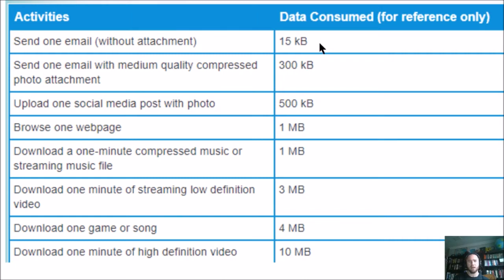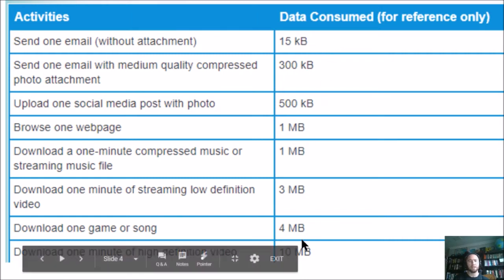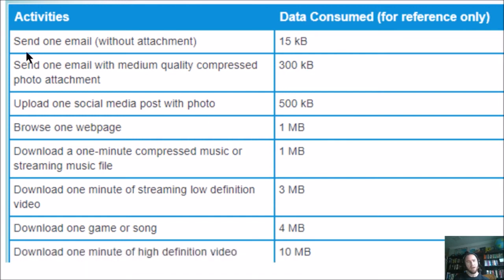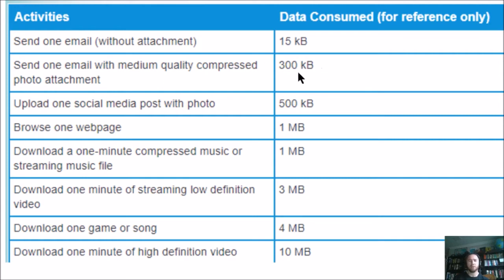The chart breaks down kilobytes and then goes to megabytes. When you send a single email without any attachments, your typical one email would be about 15 kilobytes. When you send one email with a medium quality compressed photo attached — not really crisp HD quality, but it's a picture and it'll be fine — that's going to be 300 kilobytes.